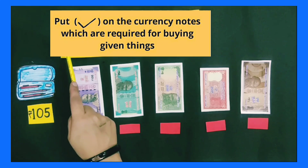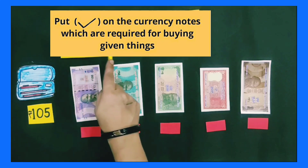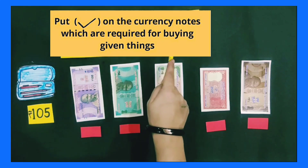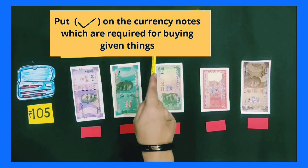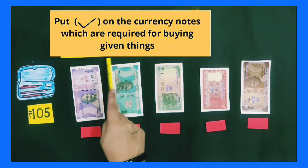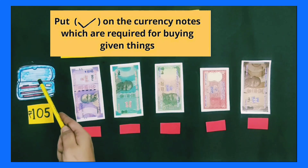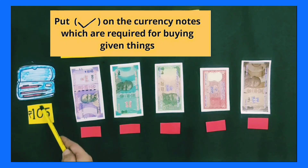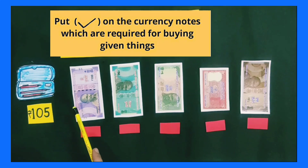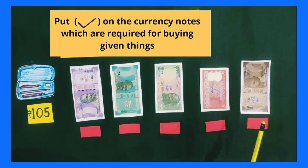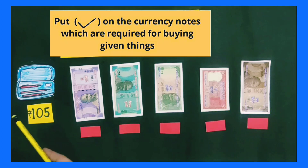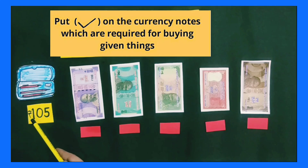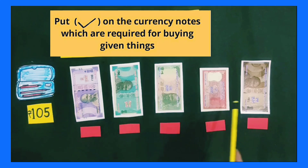Students, the fourth sum is: put a tick on the currency notes which are required for buying the given things. In this question, some things with their cost price are given on one side, and on the other side some currency notes are given. We have to choose those currency notes which are required for buying the given things.